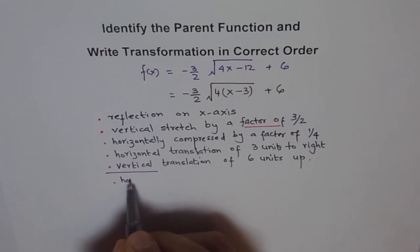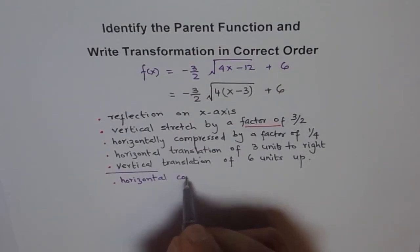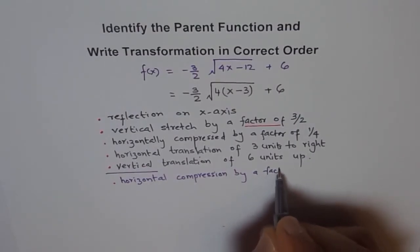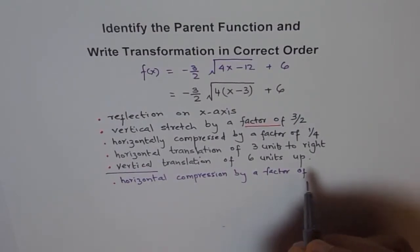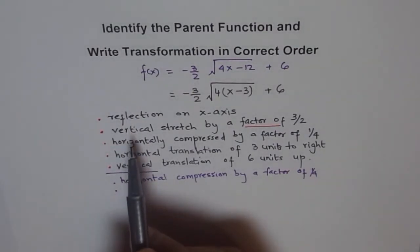So we say, horizontal compression by a factor of 1 over 4. So we are doing horizontal first.